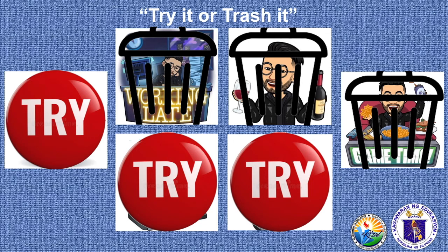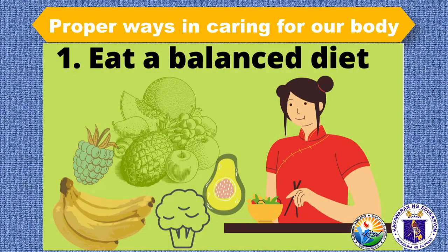Today, we will be discussing the proper ways in caring for our body. The first one is eat a balanced diet. A well-balanced diet provides important vitamins, minerals, and nutrients to keep the body and mind strong and healthy.